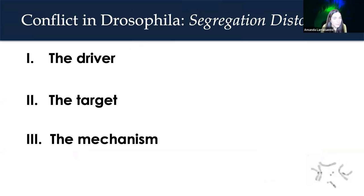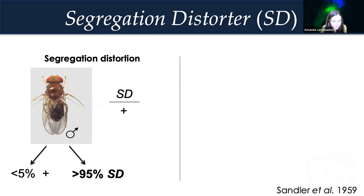First I'm going to introduce our drive system, called segregation distorter. I'll start by talking about the genetics and dynamics of the system in populations from the perspective of the driver and of the target. Then I want to talk about what we've learned about mechanism by studying the regulation of satellites in the germline. We actually still don't know the mechanism.